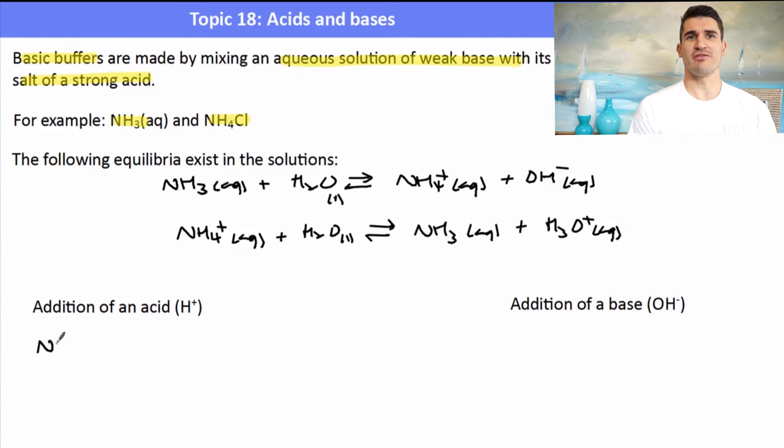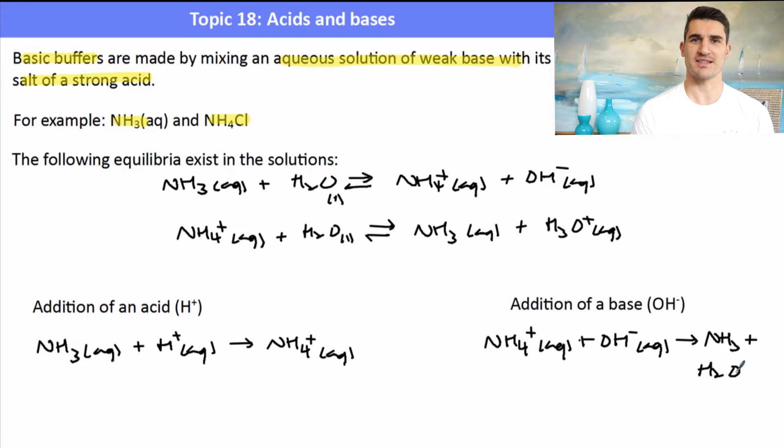So if we have the addition of acid to this buffer solution, well we have the base, the weak base ammonia, that could react with it to form ammonium, hence reducing the pH change. If we add in a base, we've got the weak acid ammonium to react with the OH minus to form water and NH3. So either way we've got a species that can react with the acid or the base, they're a conjugate pair of each other which makes this a buffer and it will resist pH changes.